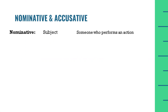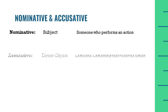We will first see what is nominative and what is accusative. Nominative is the subject of a sentence — the person who performs an action in the sentence is the subject, and the subject in German language is called the nominative case. Accusative is the direct object of the sentence. Someone or something that receives an action is the direct object, and in German language the direct object is called the accusative case.